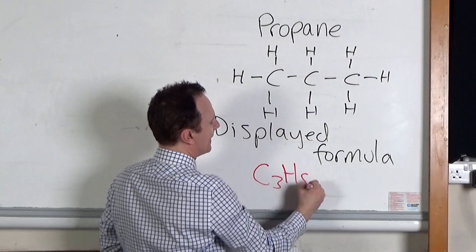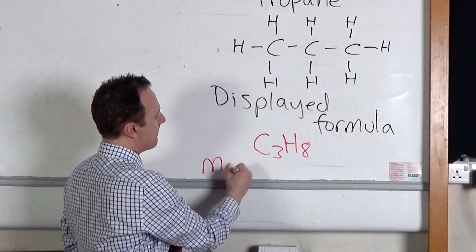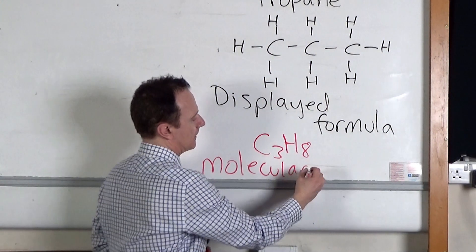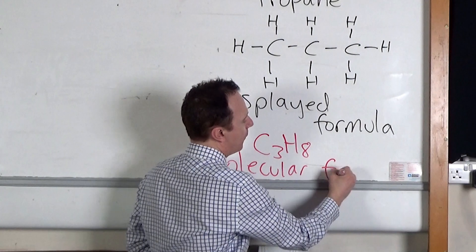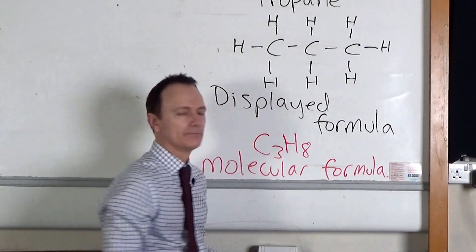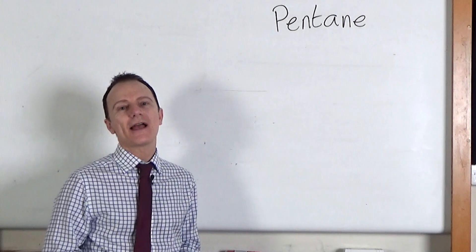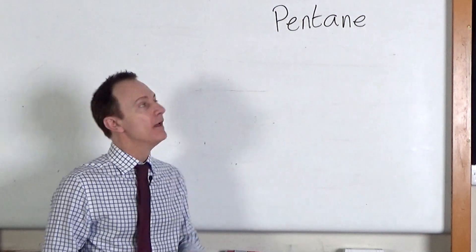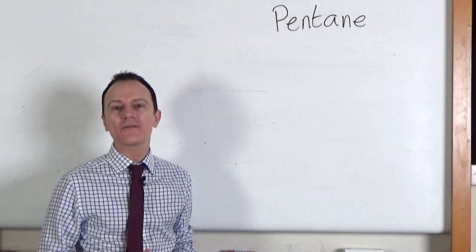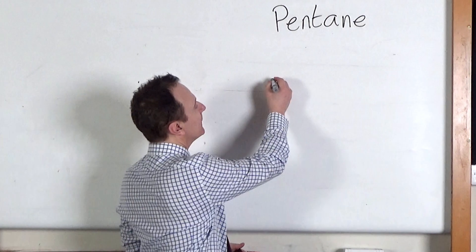That's eight hydrogen atoms — so C3H8 would be the molecular formula for propane. Now I'm going to show you how to draw a pentane molecule. The 'pent' part of the name tells me there's five carbon atoms, so that's where we start.